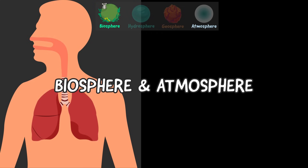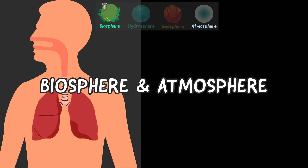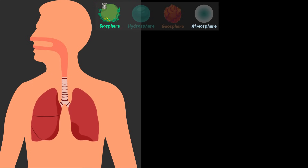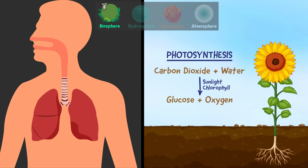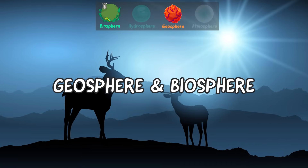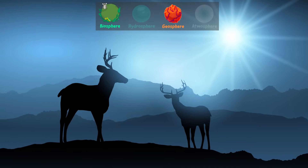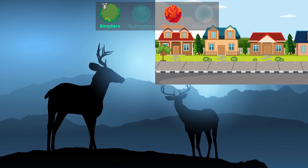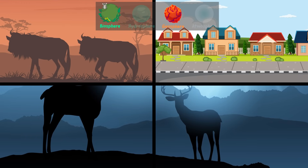Living beings need air to live. Animals use oxygen to generate energy and release carbon dioxide, and plants use carbon dioxide for photosynthesis and release oxygen into the atmosphere. And finally, let's talk about the geosphere and the biosphere. Many living beings, including humans, now live on the geosphere.